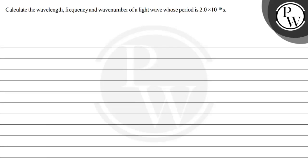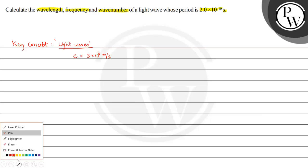Hello bachchon, let's read this question. The question says: calculate the wavelength, frequency, and wave number of a light wave whose period is 2 multiplied by 10 raised to the power minus 10 seconds. The key concept here is light waves. The only property we know about light waves is the velocity, that is 3 multiplied by 10 raised to the power 8 meters per second. So let us solve this question.